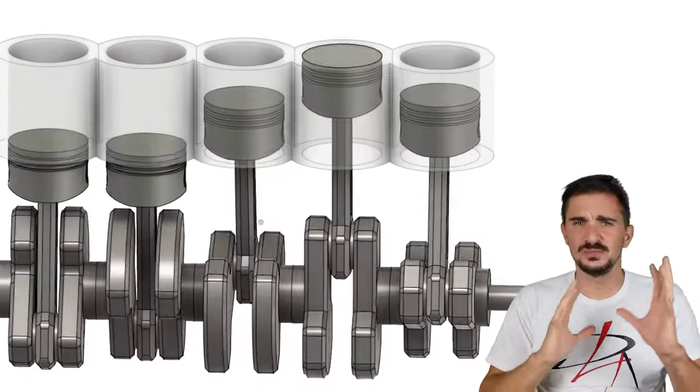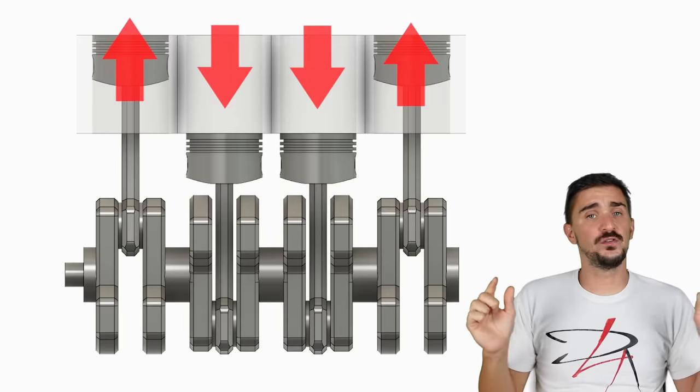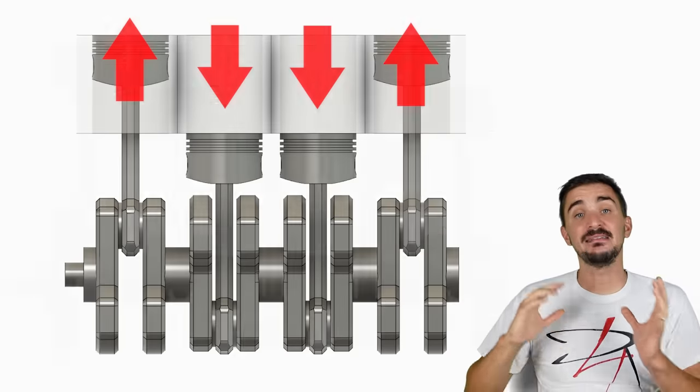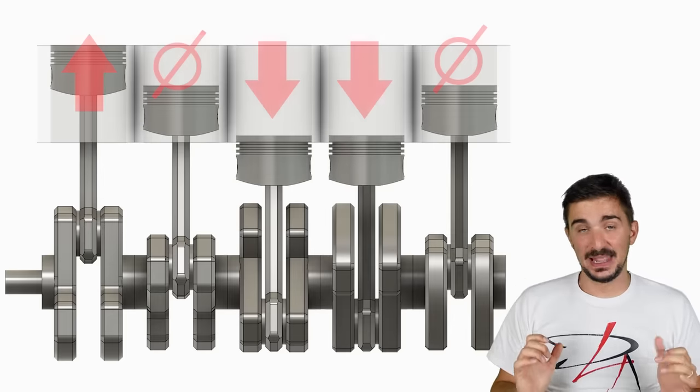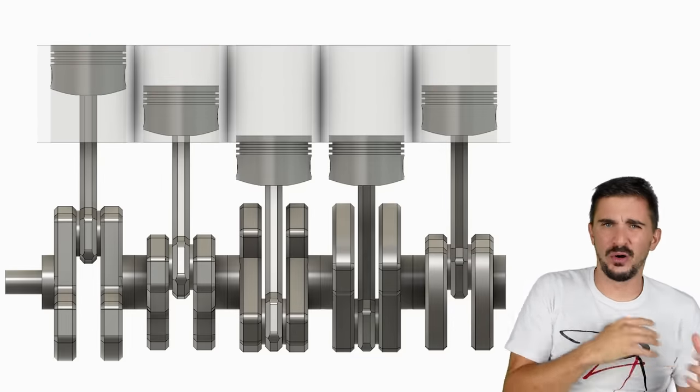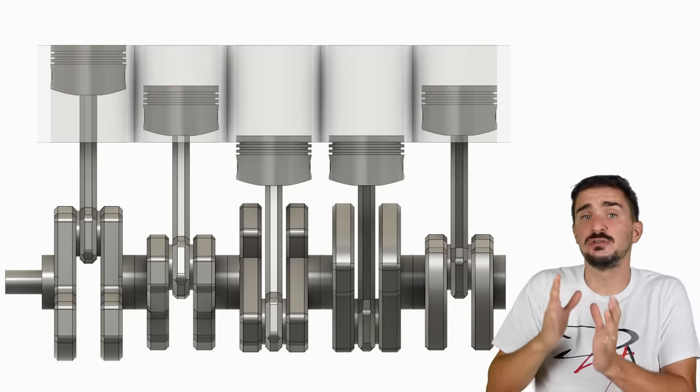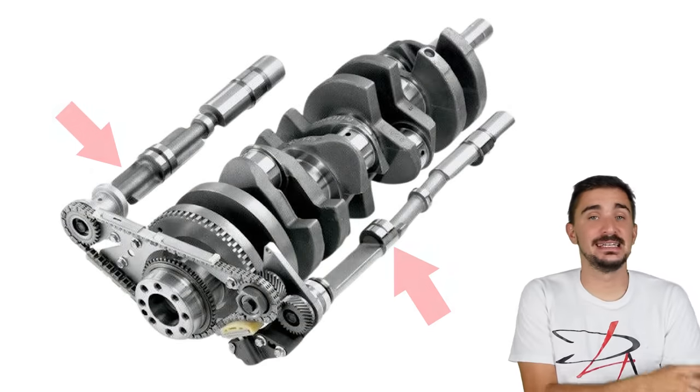The only real downside of the Inline 5 is that it has balance issues. Not major balance issues. They can be resolved, but they are issues. The Inline 4 has perfect primary balance. The Inline 5 does not. However, the Inline 5 has a much better secondary balance than the Inline 4.